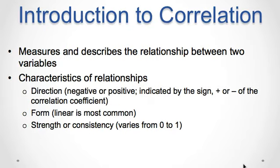Correlation is a statistical procedure that is used to measure and describe the linear relationship between two variables. Usually two variables are simply observed as they exist naturally in the environment. There's no attempt to control or manipulate the variables.